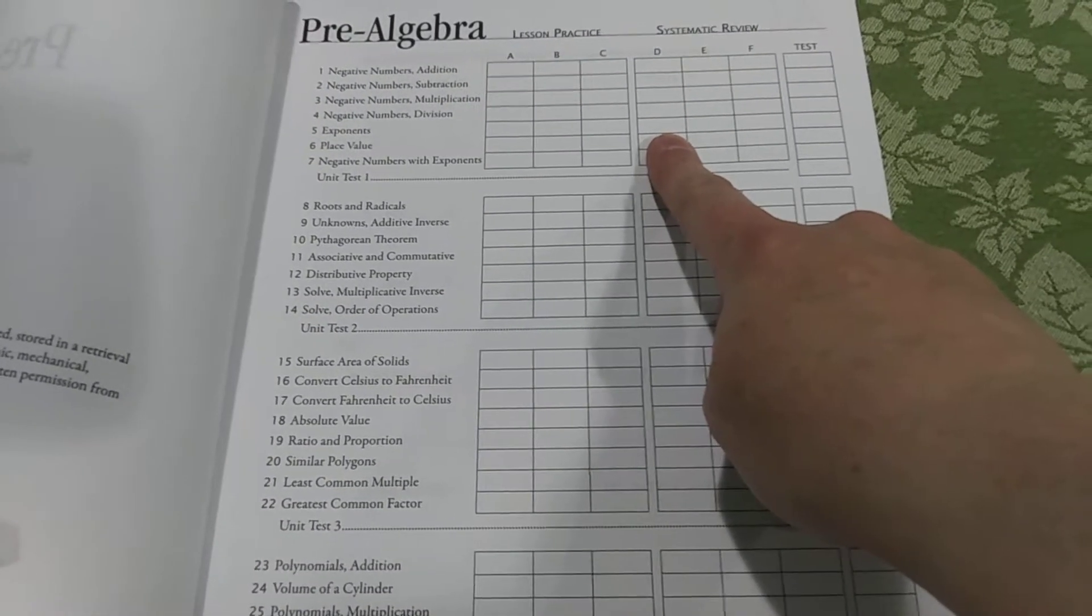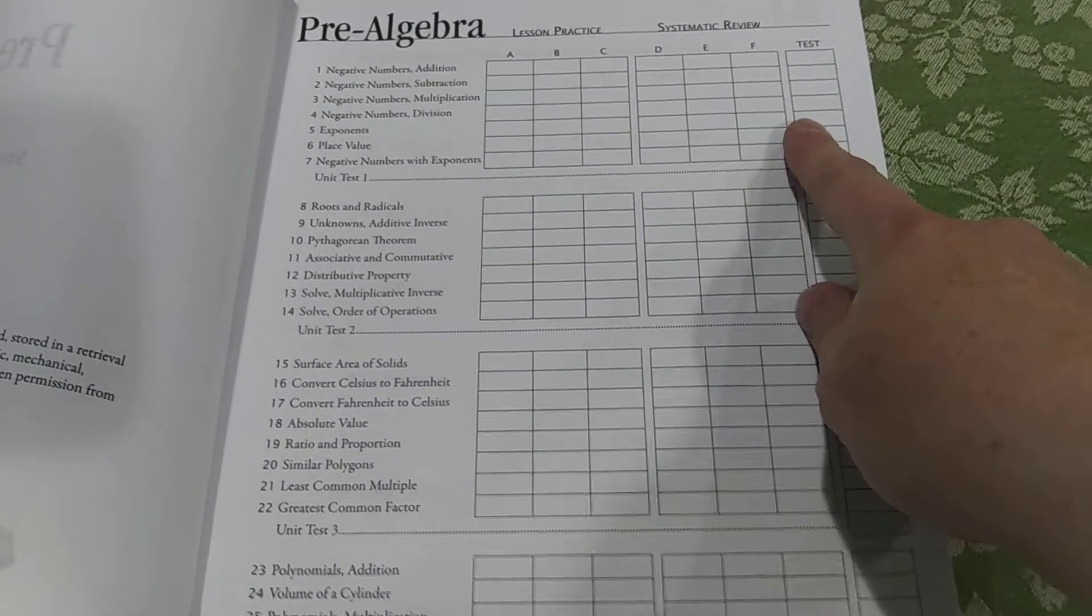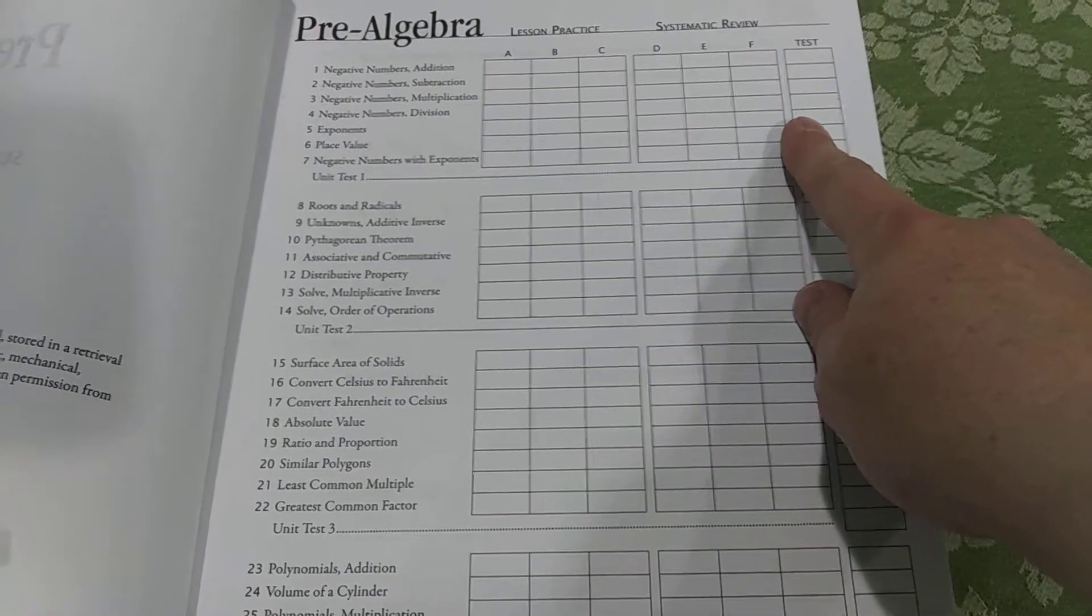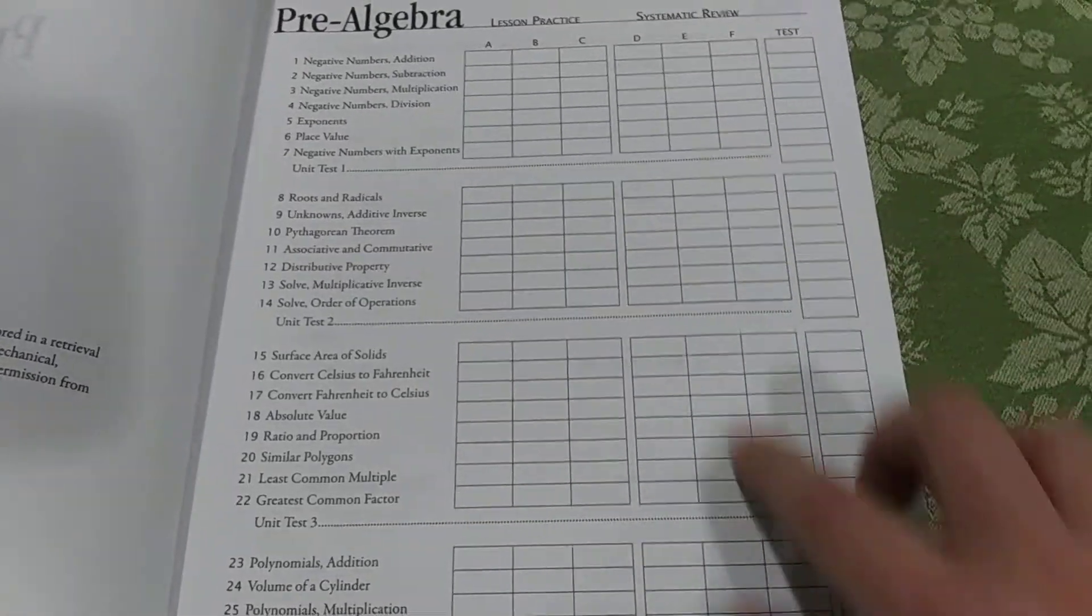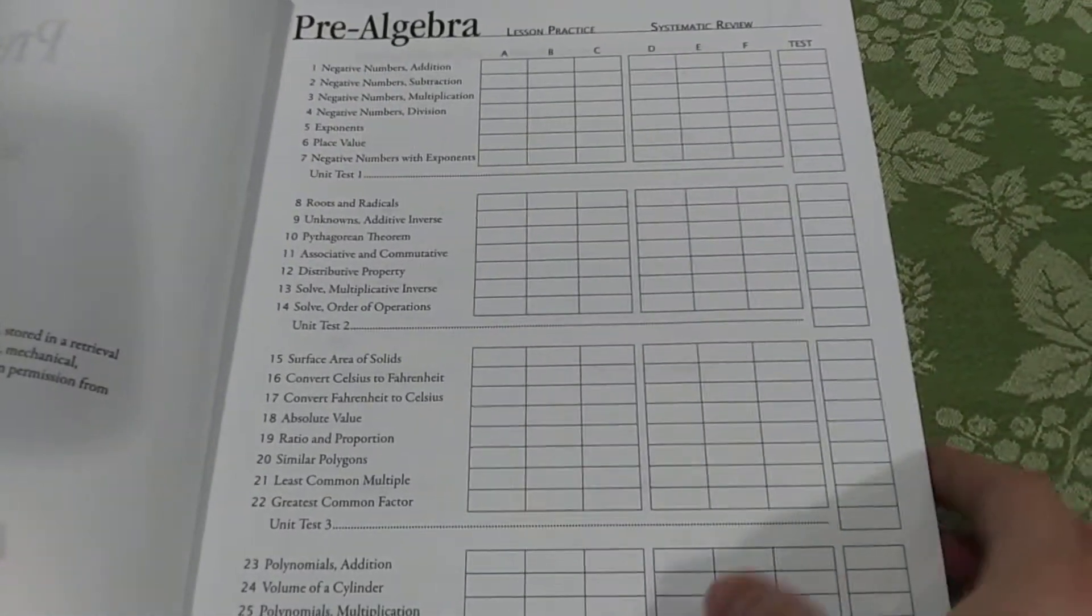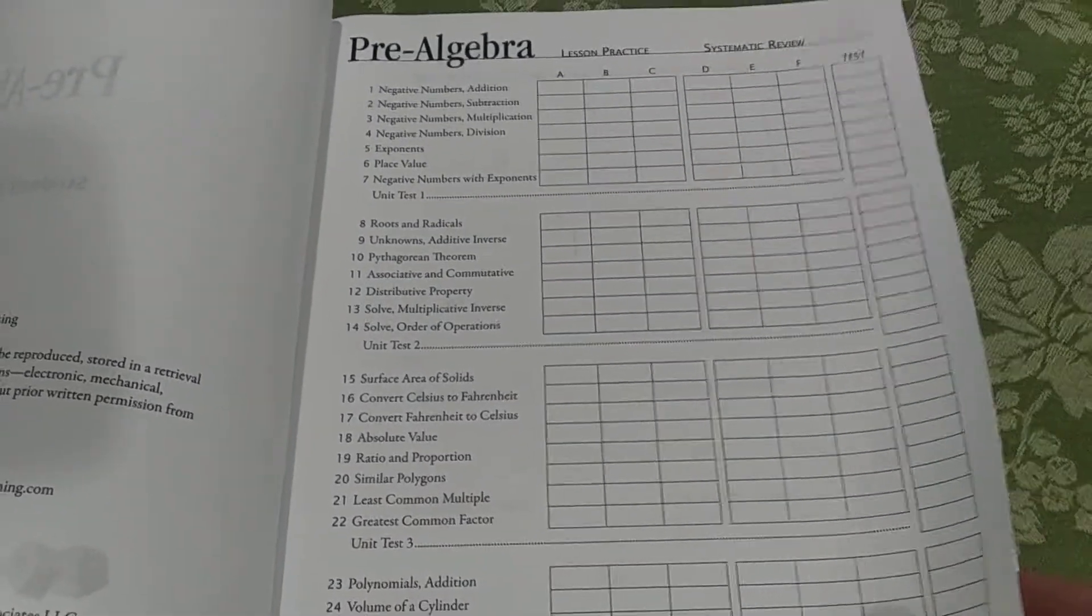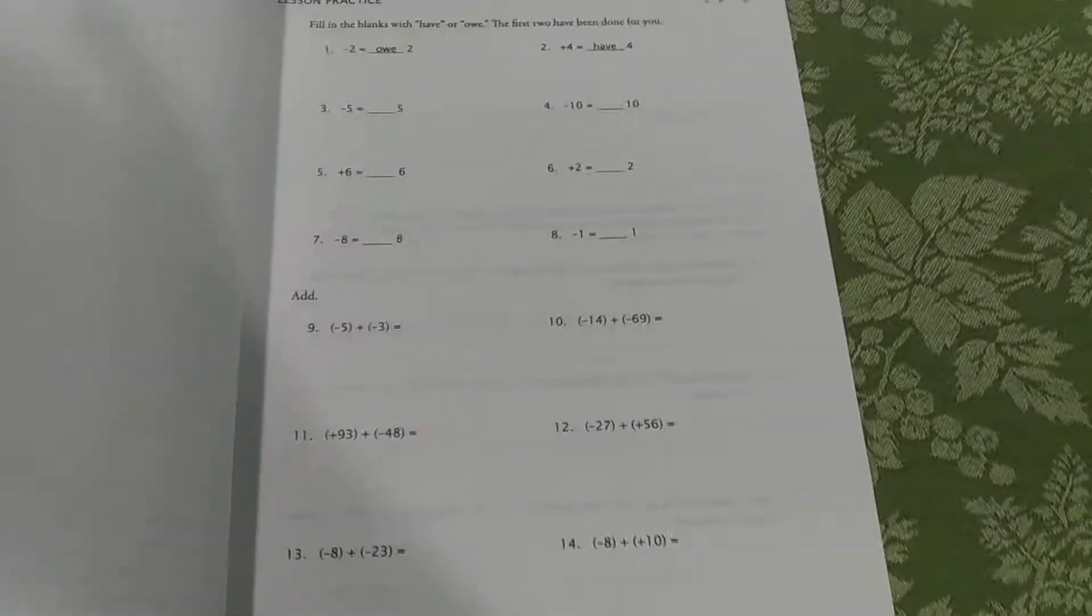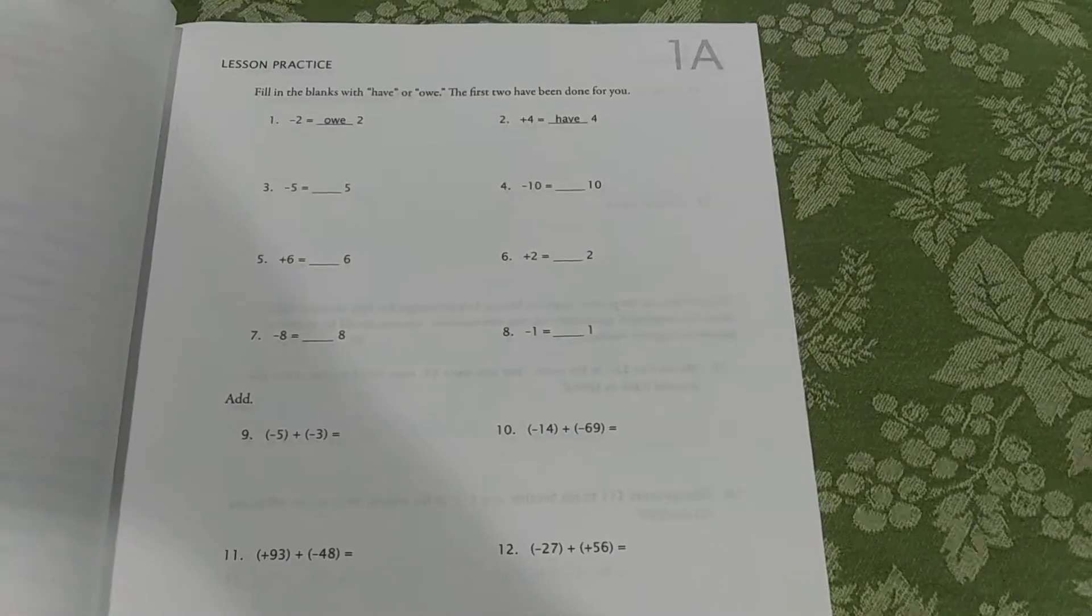And if he passes review D with a good score, we go ahead and test and we skip E, F, and G is always optional. If he's struggling, if he gets to D and maybe has a bunch of answers wrong, we'll continue with E and F. You can also go on their website and print out more worksheets if you're really having a hard time. And you can always call them up and ask for help. They're very helpful people.